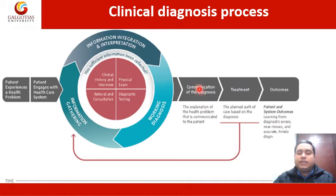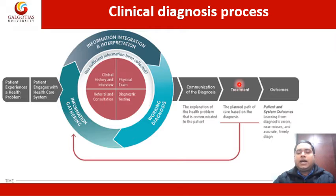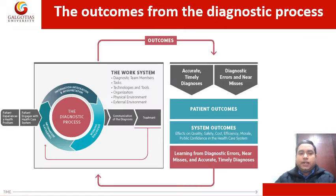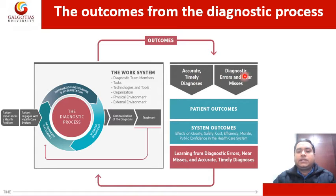After the report is generated from testing, a doctor decides on the treatment, and the outcome is measured. Outcomes from the diagnostic process can include accurate and timely diagnosis, diagnostic errors and near misses, patient outcomes, system outcomes, and learning from diagnostic errors and near misses. This is the work system of the diagnostic process, which consists of the diagnostic team members, task, technology and tools, the organization, physical environment, and internal environment.